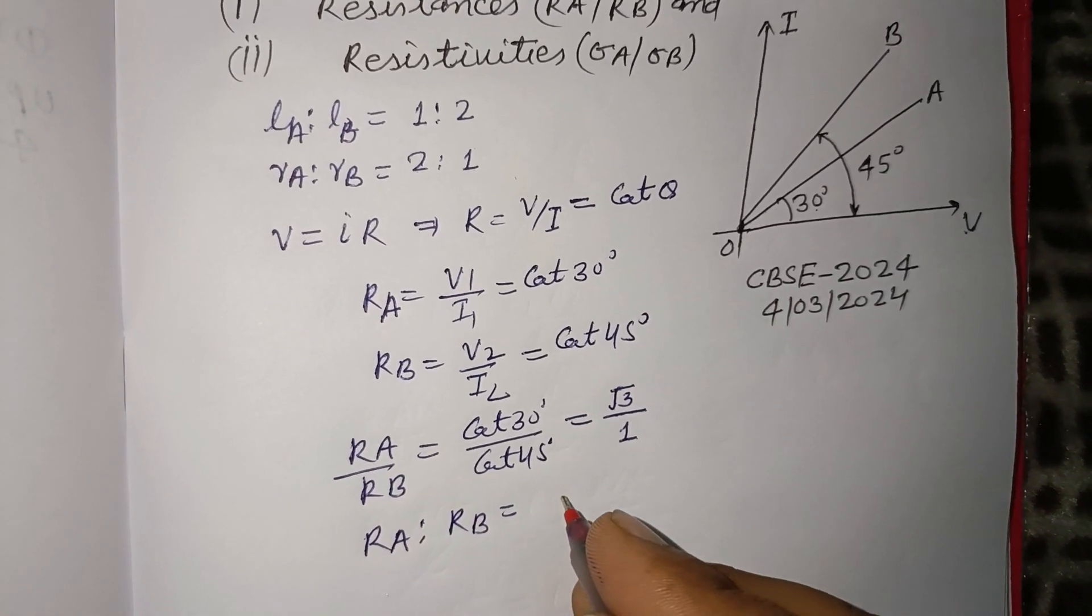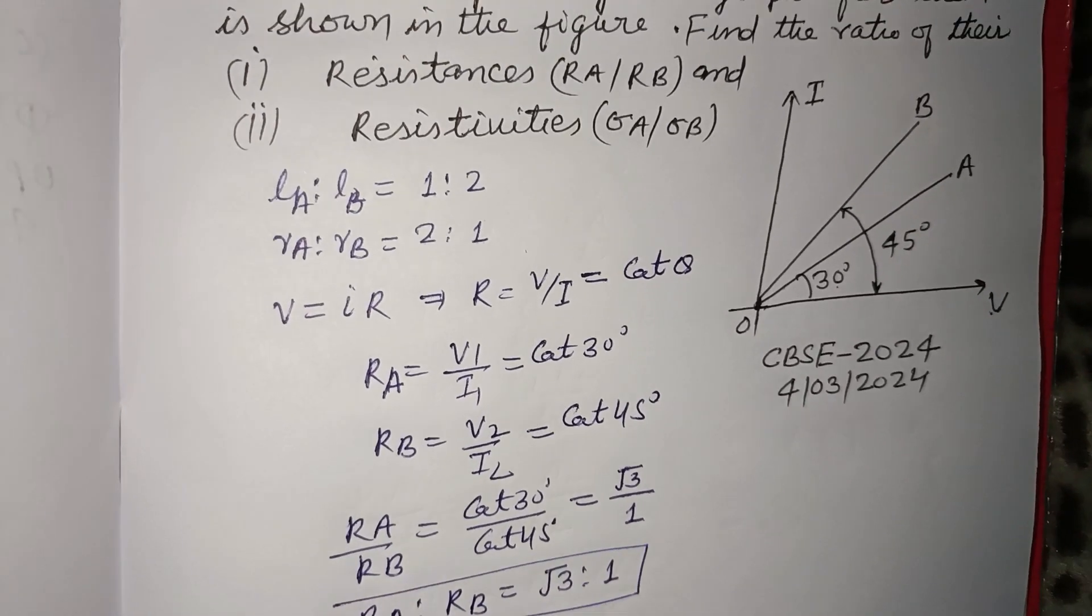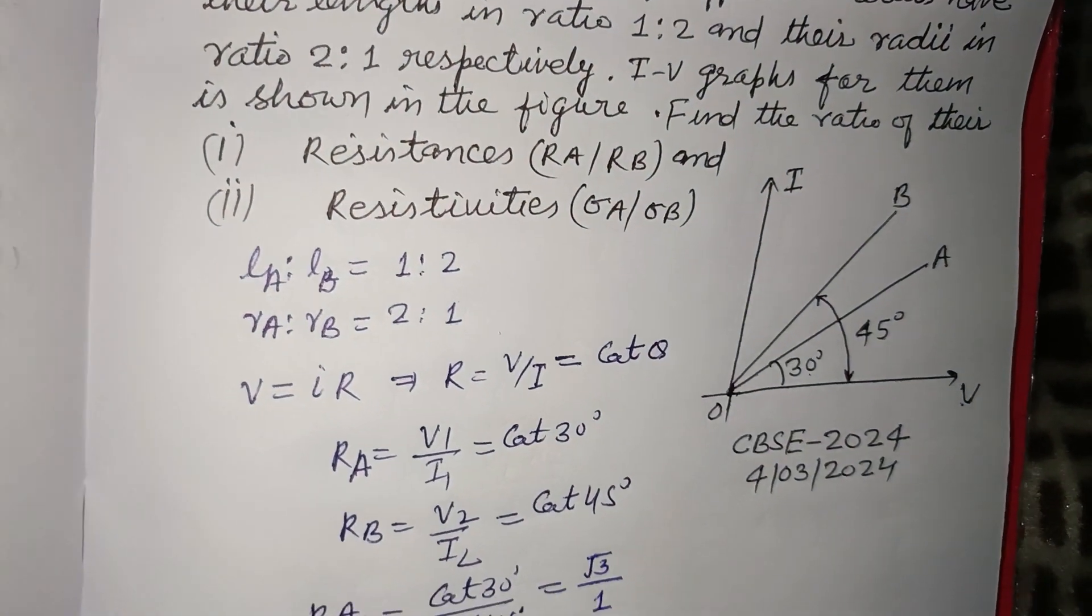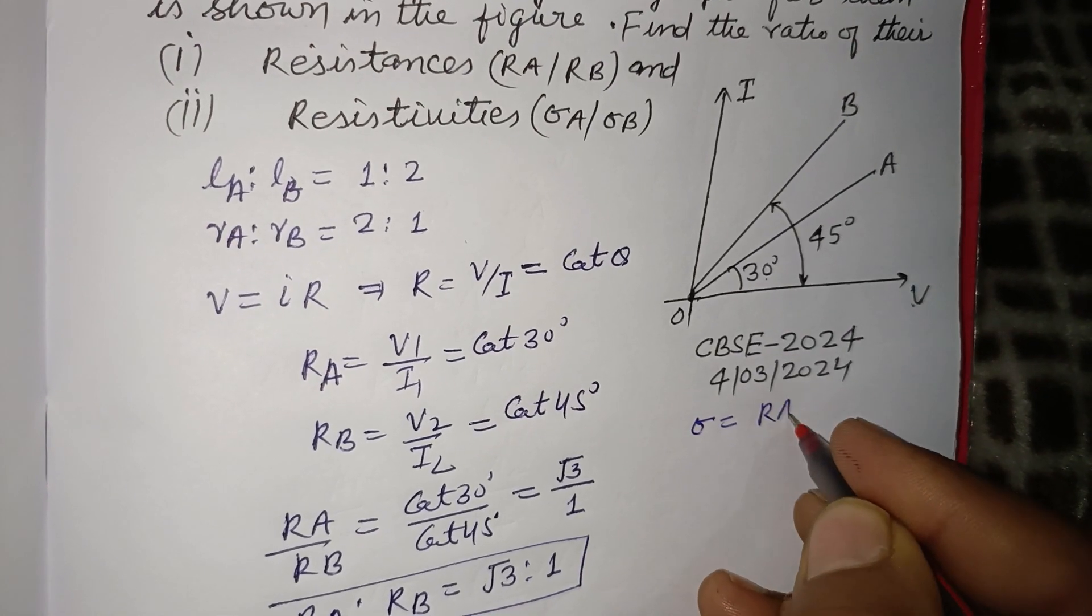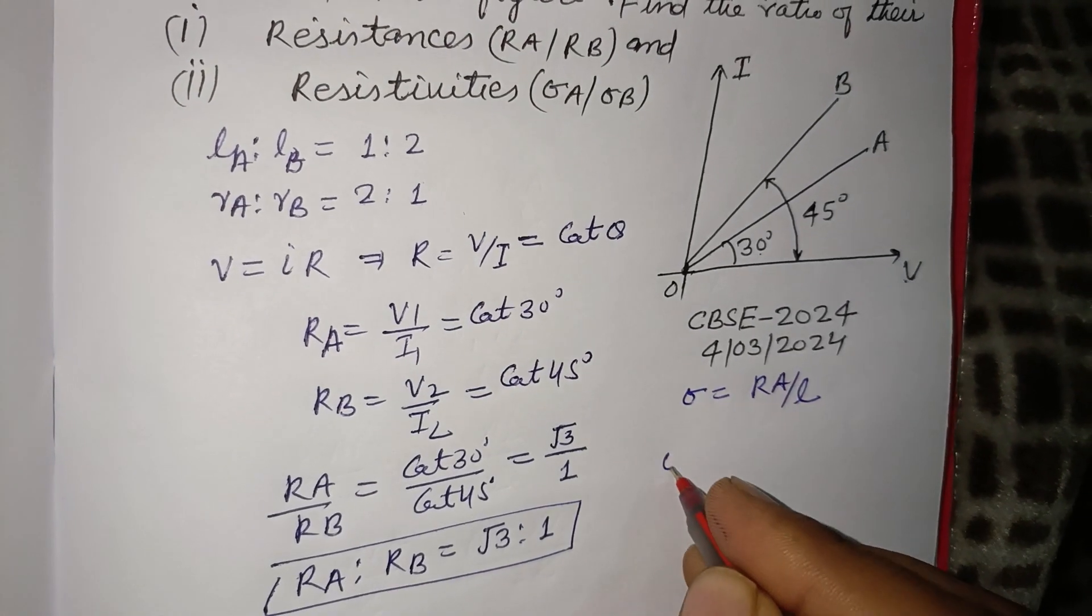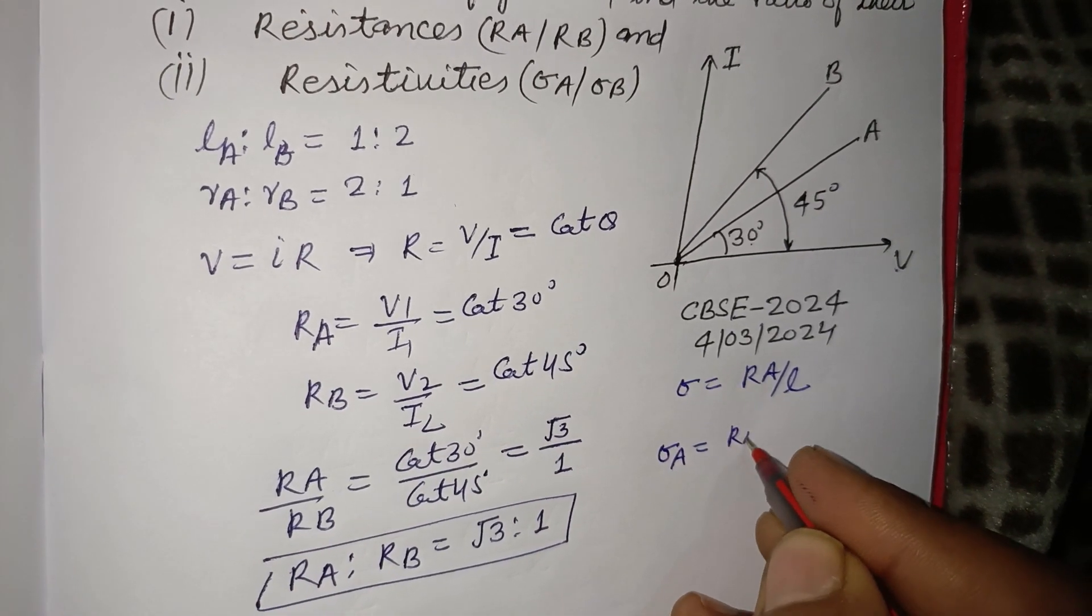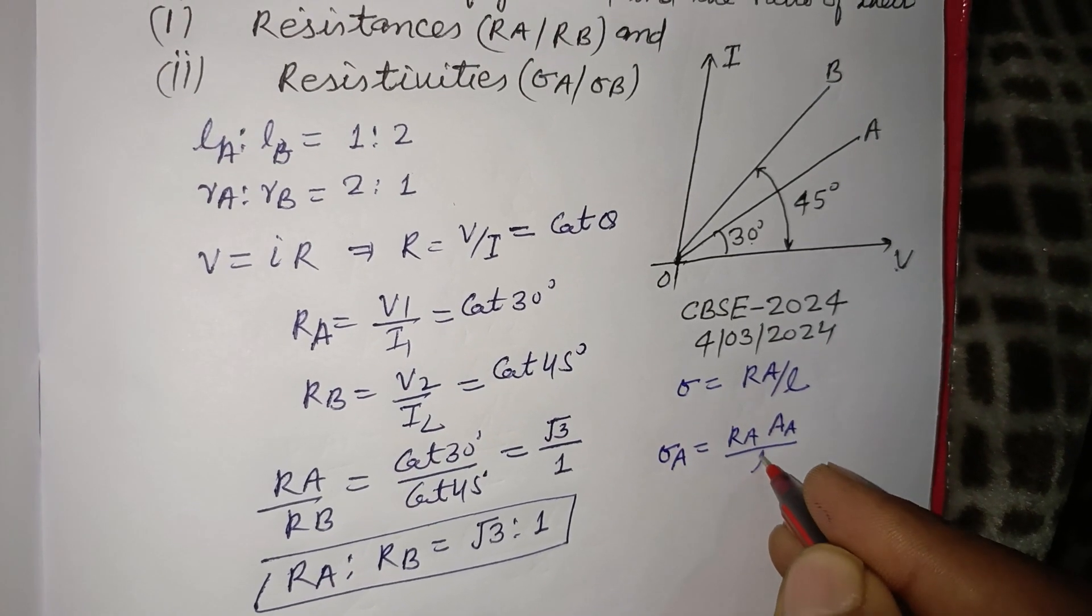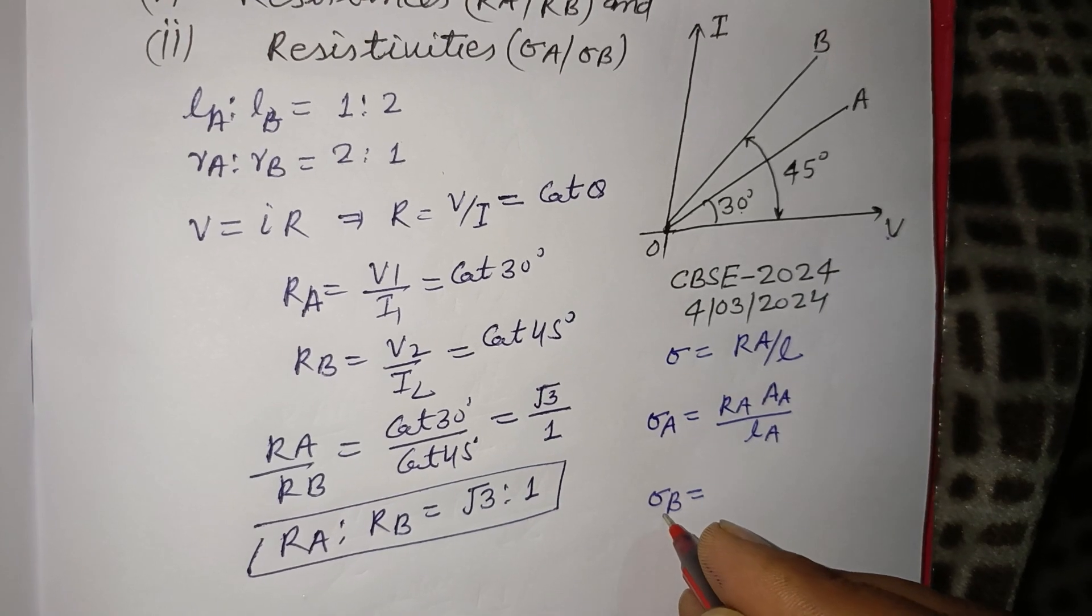So the resistance ratio RA:RB is √3:1. Similarly, the resistivity of wire A is σA = RA·AA/LA, and resistivity of wire B is σB = RB·AB/LB.